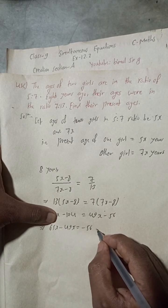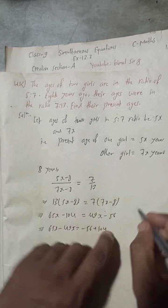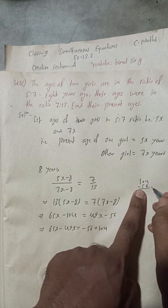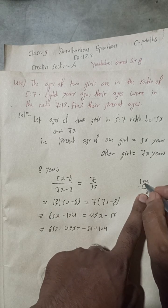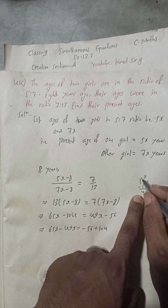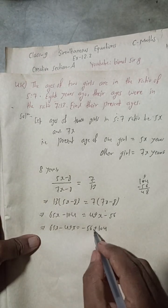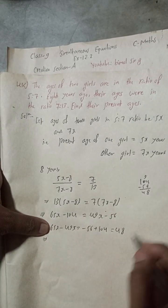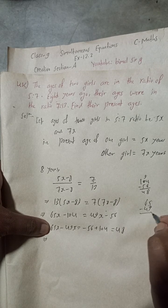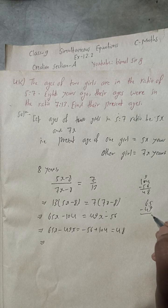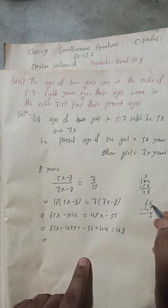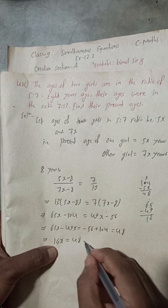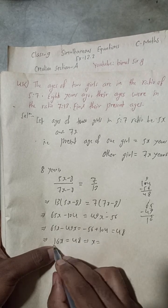On the right side we have 7 × 7x = 49x and 7 × 8 = 56, giving 49x − 56. Bringing terms together: 65x − 49x = 104 − 56, which gives 16x = 48.